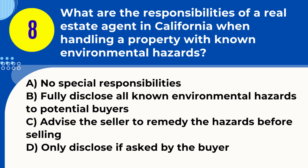Question 8. What are the responsibilities of a real estate agent in California when handling a property with known environmental hazards? A. No special responsibilities. B. Fully disclose all known environmental hazards to potential buyers. C. Advise the seller to remedy the hazards before selling. D. Only disclose if asked by the buyer.